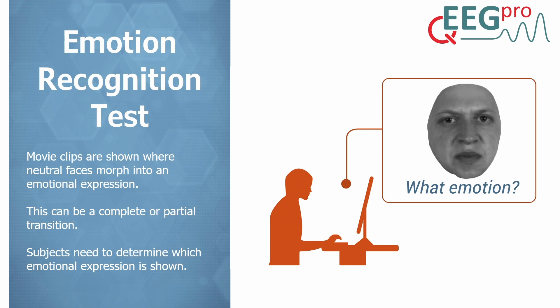The next test is the Emotion Recognition Test. In this test, short movie clips are shown, which show a neutral face that slowly morphs into one of six emotional expressions: anger, disgust, happy, sad, surprise, and fear. The difficulty of each trial differs depending on whether the transition is shown fully or whether only part of the transition is shown. Subjects are instructed to select the correct emotional expression after each trial. Research shows that performance is impaired in autism spectrum disorder and in patients with ventromedial frontal lobe lesions. Patients suffering from post-traumatic stress disorder, bipolar disorder, or psychotic disorders have also been shown to have altered recognition performance on specific subsets of facial expressions.